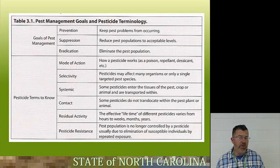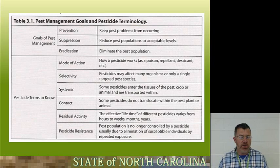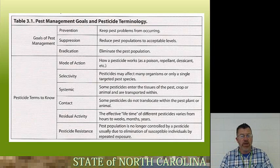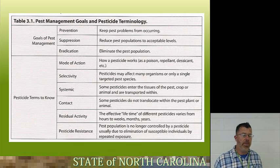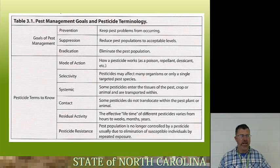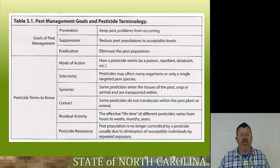Contact pesticides do not translocate within the pest, plant, or animal — they stay on the outside. If you're spraying a contact insecticide, the insect has to come in contact with that pesticide before it's killed. Versus if it were systemic and goes through the plant tissues, an insect that starts biting and eating the plant gets the insecticide in it because the pesticide is systemic — it's inside the plant.